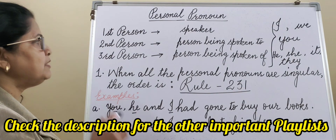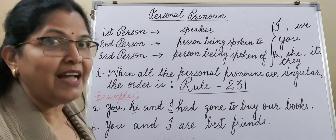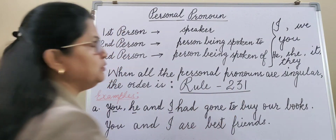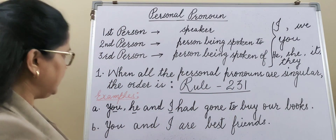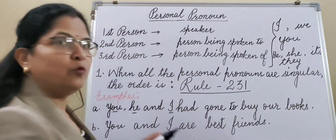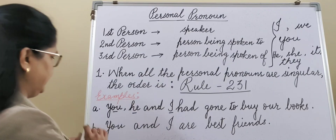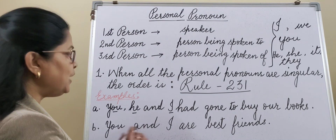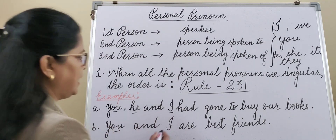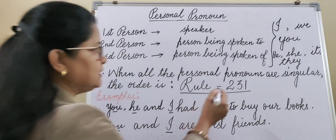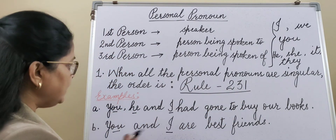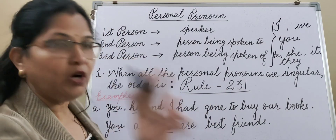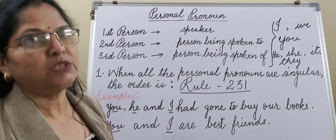Keep in mind: whenever we arrange three persons together and the persons are all singular, we arrange them according to Rule 231. By the way, if one of the three is missing, what do we do? Example B: 'You and I are best friends.' You — second person; I — first person. Third person is missing here. Whatever is missing, we remove it. But the order will be followed the same — that is Rule 231.